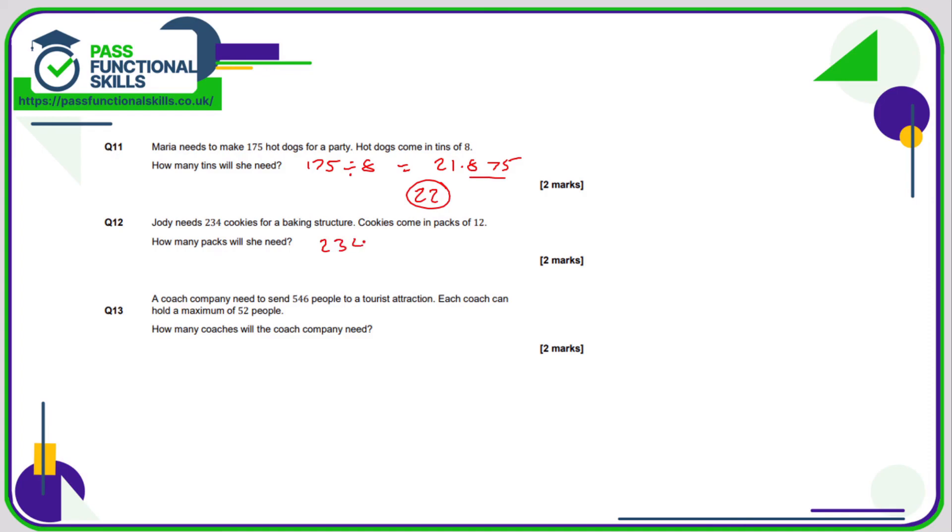Question 12 is 234 divided by 12, and that works out as 19.5, but you can't buy half a pack of cookies, so that's going to be rounded up to 20.